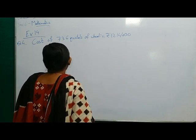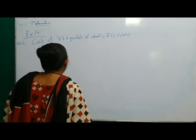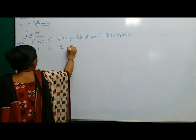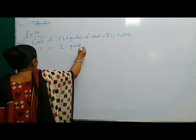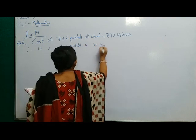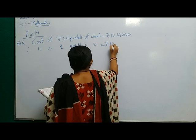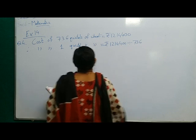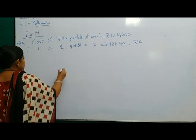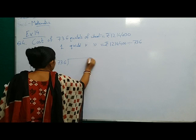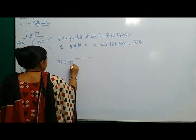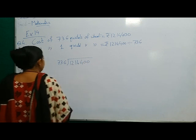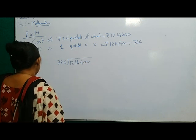This is given that cost of 736 quintals of wheat. Therefore, cost of 1 quintal of wheat, you have to divide this number by 736. So, 736 will be the divisor and 12,14,400 will be the dividend. Now, start dividing.